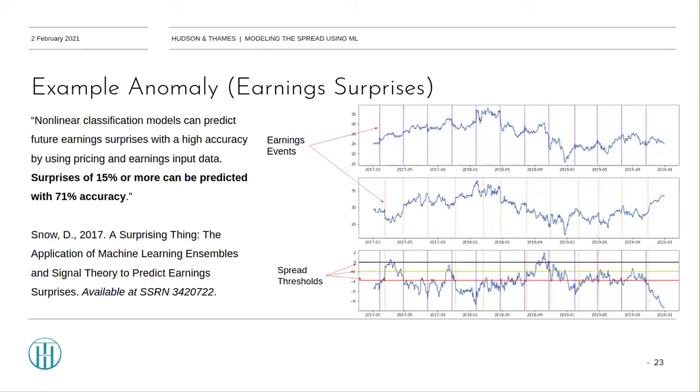An example of this is earnings surprises. With the benefit of foresight, you can see earnings announcements and their impact on price. You can also figure out that no amount of lagged returns or neural network layers would have been able to predict these movements. Yet, these specific events have been shown in the literature as being relatively predictable. As an example here, this is a paper by Derek Snow, published in 2017.